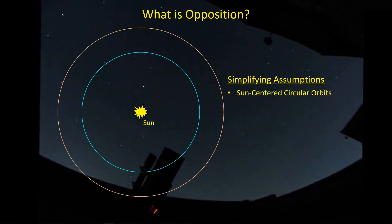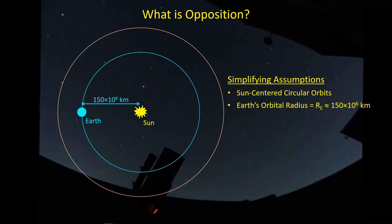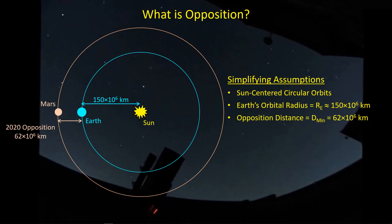First of all, we have the Sun. I'm going to assume that the Earth's orbit and Mars' orbit are both circular and centered on the Sun, which is obviously not quite correct. We'll put the Earth at 150 million kilometers away from the Sun — that'll be its orbital radius. As of the 2020 opposition, Mars is about 62 million kilometers away from Earth, which occurred on the 13th of October. So the opposition distance is simply added to the Earth's orbital radius to get Mars' orbital radius of 212 million kilometers.